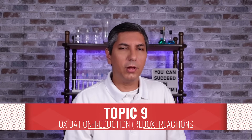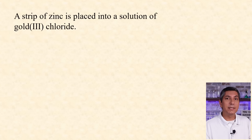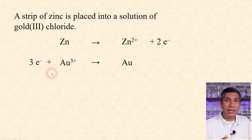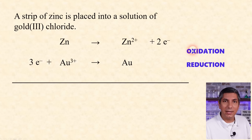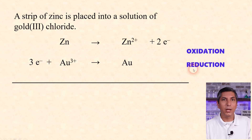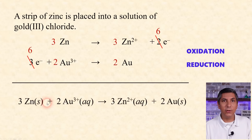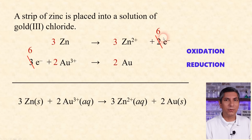We often write redox reactions into half-reactions to help us see where the electrons are going. In this process, zinc metal is being transformed into zinc 2+ ions, and gold 3+ ions are being transformed into gold metal. We balance the charges with electrons. Since zinc is going up in charge, it's being oxidized, and since gold ions are going down in charge, it's being reduced. We need to get the electrons to cancel, so we multiply the half-reactions by 3 and 2, and add the two half-reactions to get the overall balanced equation. We can see that 6 electrons are being transferred in this process.